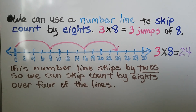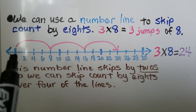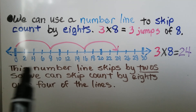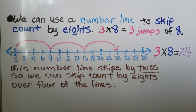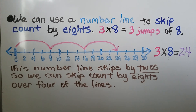Now we're at 24. So be careful if your number line is skipping by 2s, or if it's going in order from 1 through 8. You need to look at the scale of the number line to make sure you're making the correct jumps.